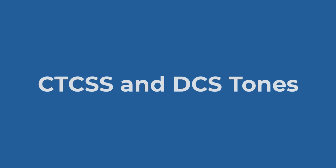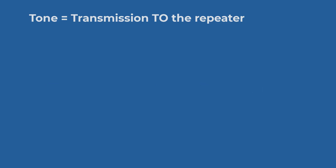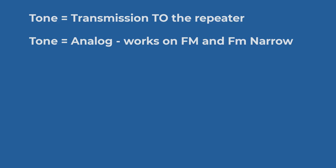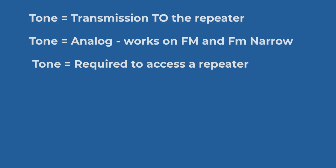Hi, it's Karen at RT Systems. We're going to talk today about CTCSS and DCS tones. But first, I want to clarify some terms. Tone is transmission to the repeater. Tone is analog. It works only on FM and FM narrow. Tone is required to access most amateur repeaters these days.